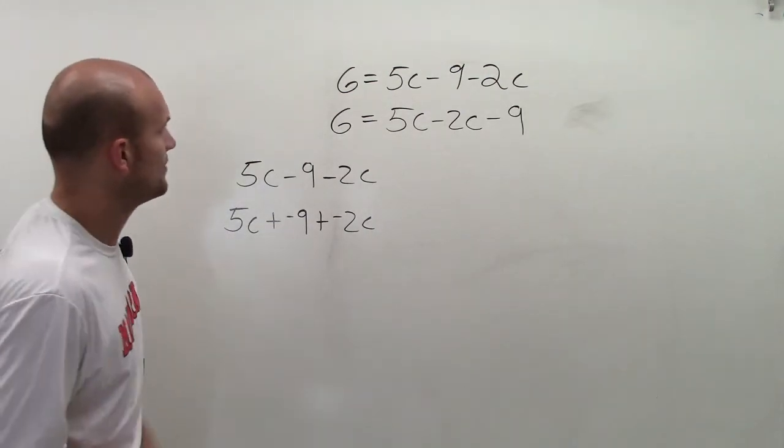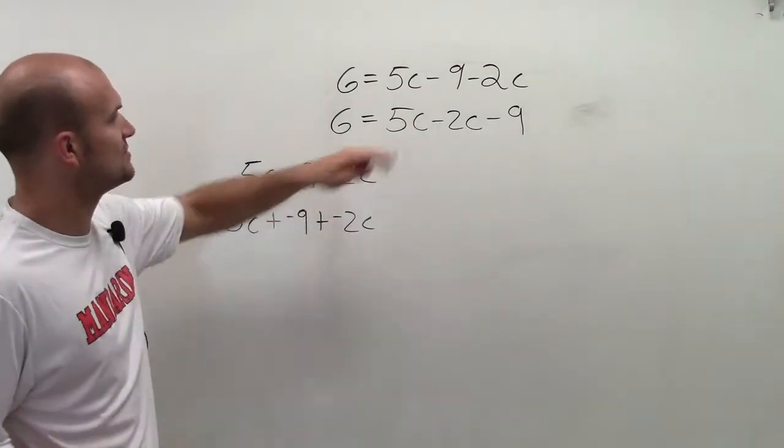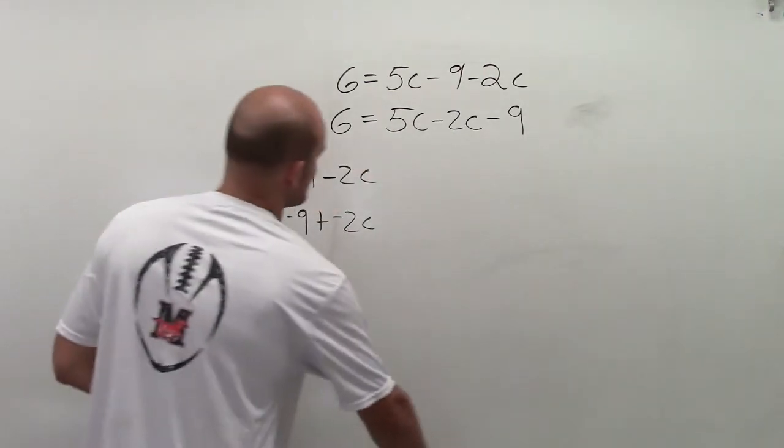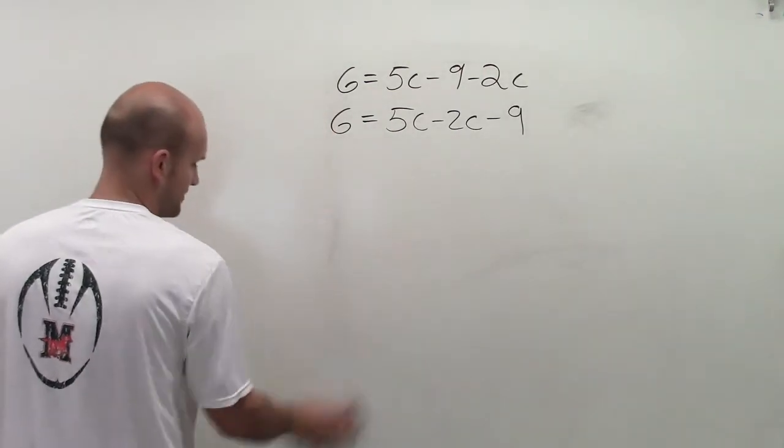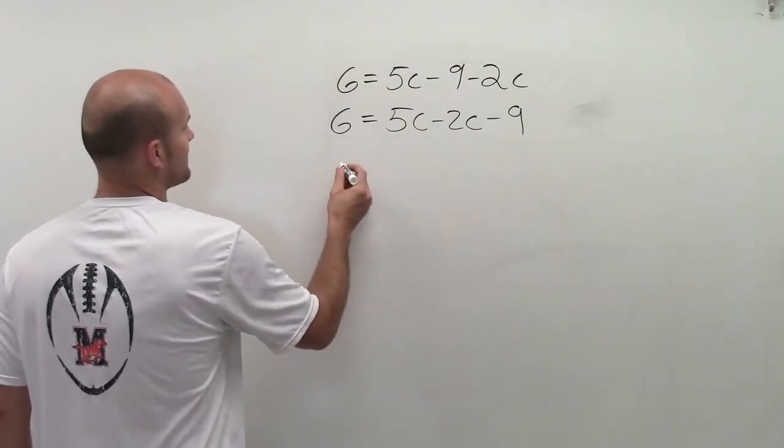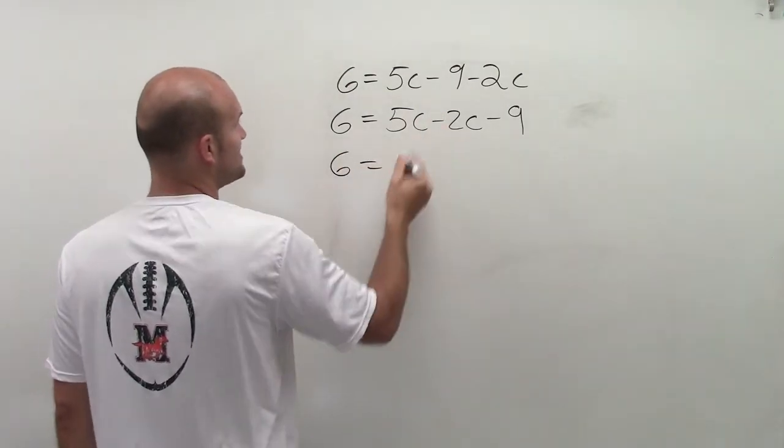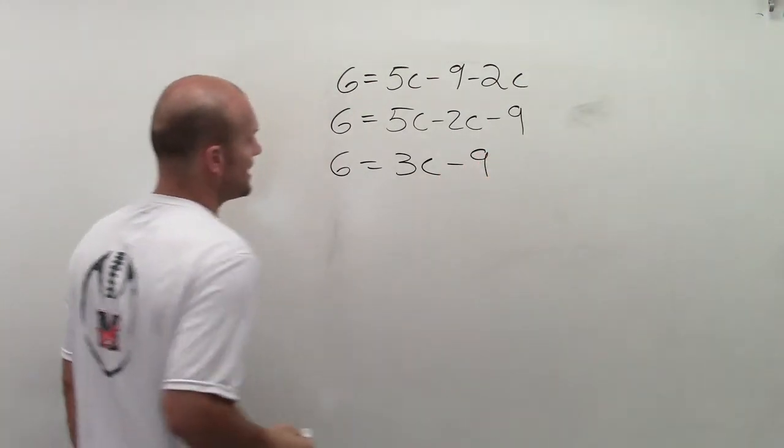So to complete this problem now, I'll just do 6 equals 5c minus 2c, which is going to leave me 3. So I'll have 6 equals 5c minus 2c, which is 3c minus 9. Now I'm at a two-step equation.